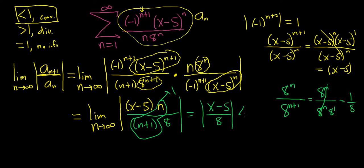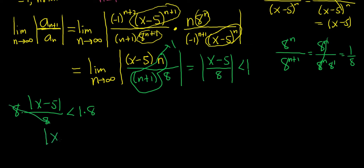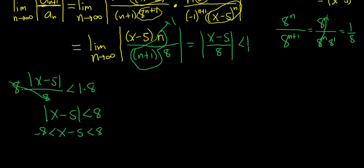We want this to converge, so we set it less than 1. Using properties of absolute value: |x minus 5| over 8 is less than 1. To solve for x, multiply both sides by 8: |x minus 5| < 8. When you drop the absolute value you get x minus 5 < 8 and x minus 5 > negative 8. Adding 5 to all three parts gives negative 3 < x < 13. So the series converges for all x between negative 3 and 13.